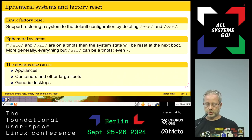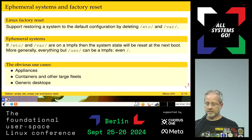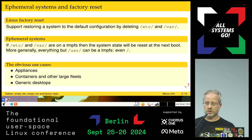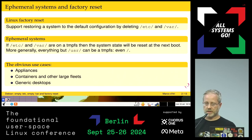Short summary: factory reset is when you delete /etc and /var from a system. An ephemeral system is when these directories are on a TMPFS or something like that, so they are rebuilt at every boot.